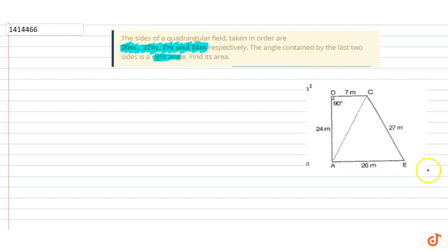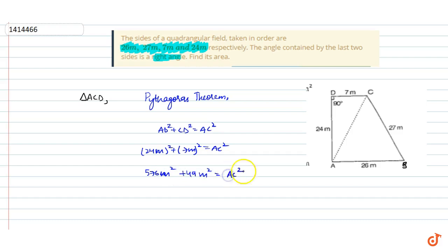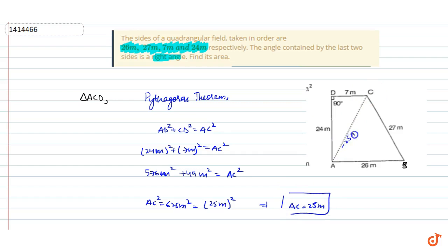We label the vertices A, B, C, D. Considering triangle ACD, by Pythagoras theorem: AD squared plus CD squared equals AC squared. That means 24m squared plus 7m squared equals AC squared. So AC squared is 576 plus 49, which equals 625m squared, that is 25m whole square. So AC length is 25m.